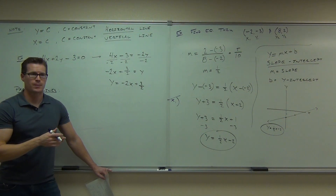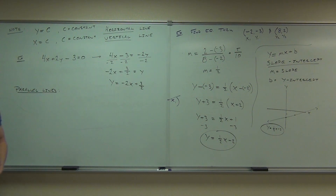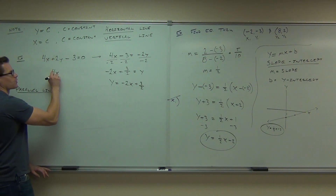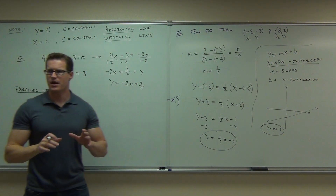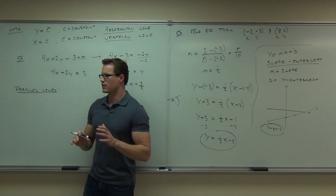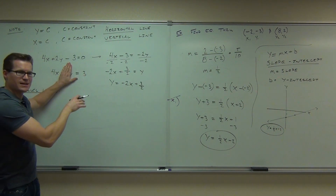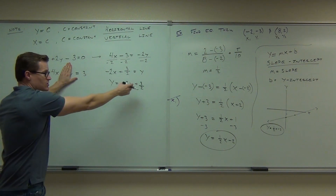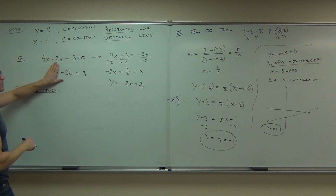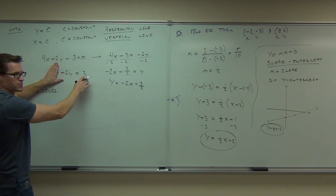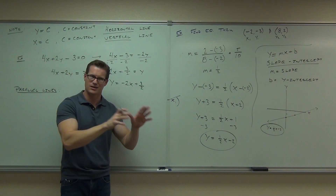Could you still graph that? Yes. Sometimes it's nice to keep it in standard form. Have you ever learned the cover-up method for graphing from standard form? If you want to find the X-intercept, cover up your Y and divide — you know this is going to cross the X-axis at 4 thirds. If you want to find the Y-intercept, cover up the X and divide by 2, and that's going to cross the Y-axis at positive 3 halves. So just a little refresher on those.